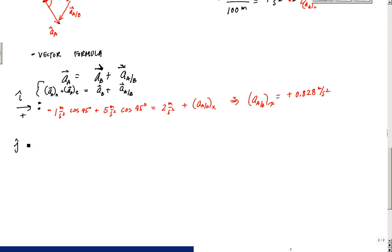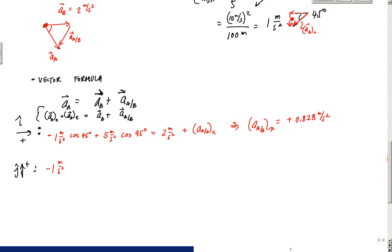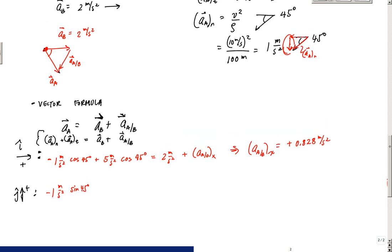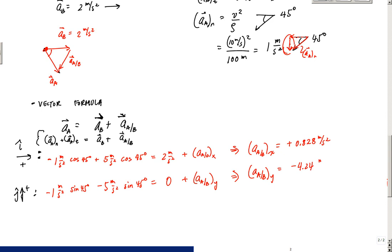Looking at the J-hat component, with positive upward: I have negative 1 meter per second squared for AAN times sine 45 degrees — negative because this component is downward — then negative 5 meters per second squared times sine 45 degrees for AAT, and particle B has no acceleration in the vertical, so 0, plus AAB_y. Solving this gives AAB_y equal to negative 4.24 meters per second squared.